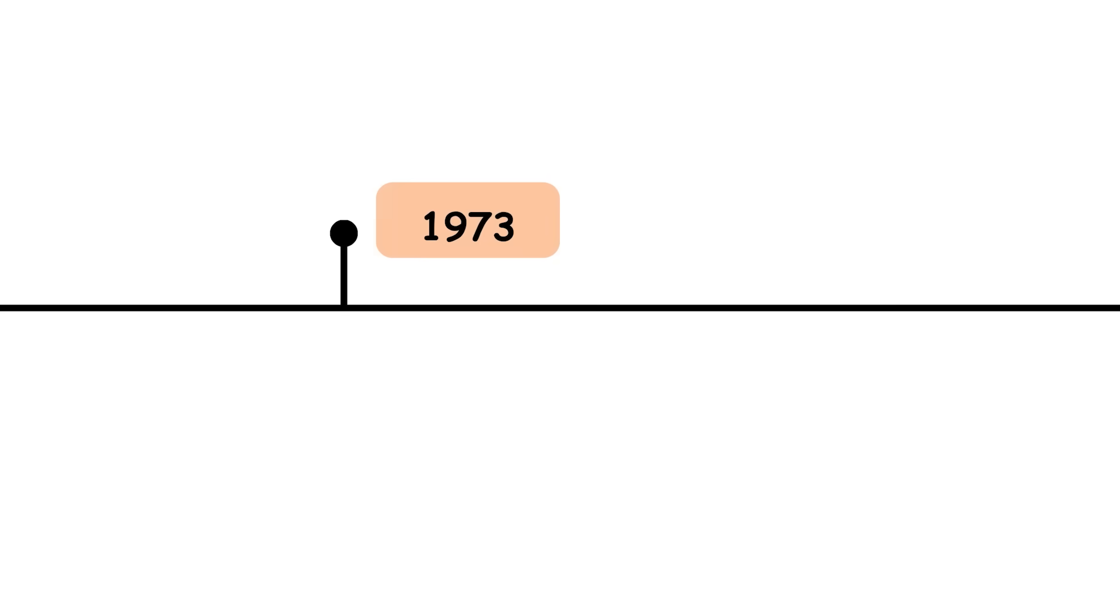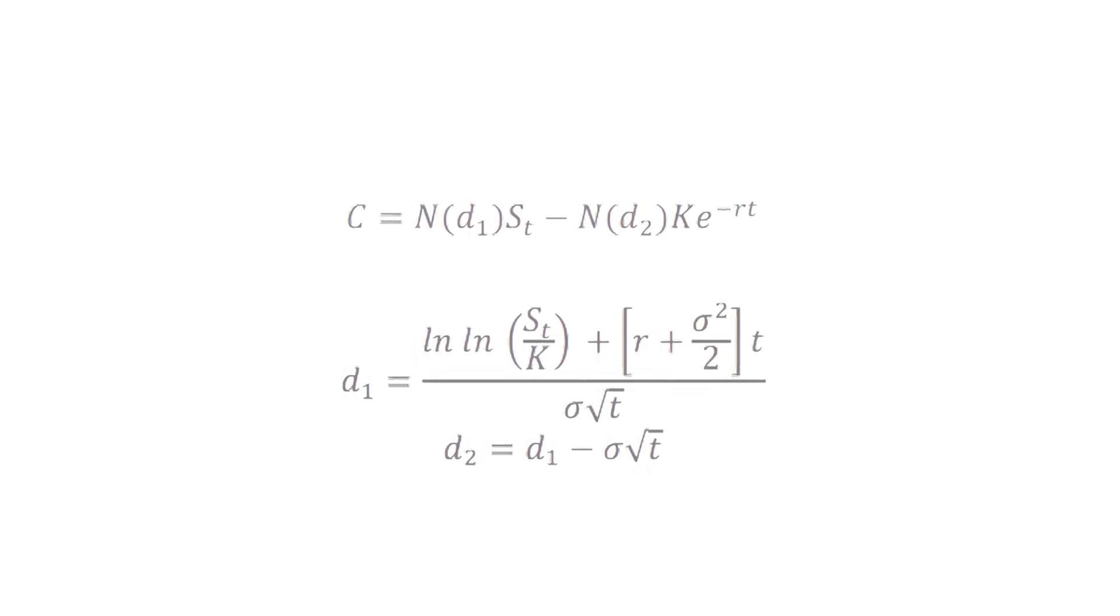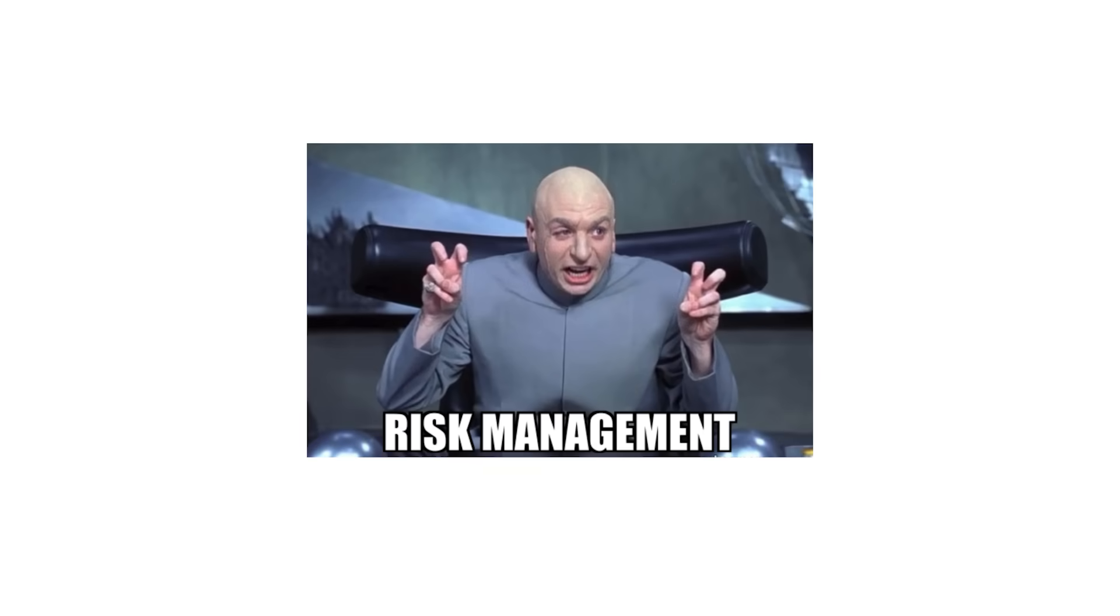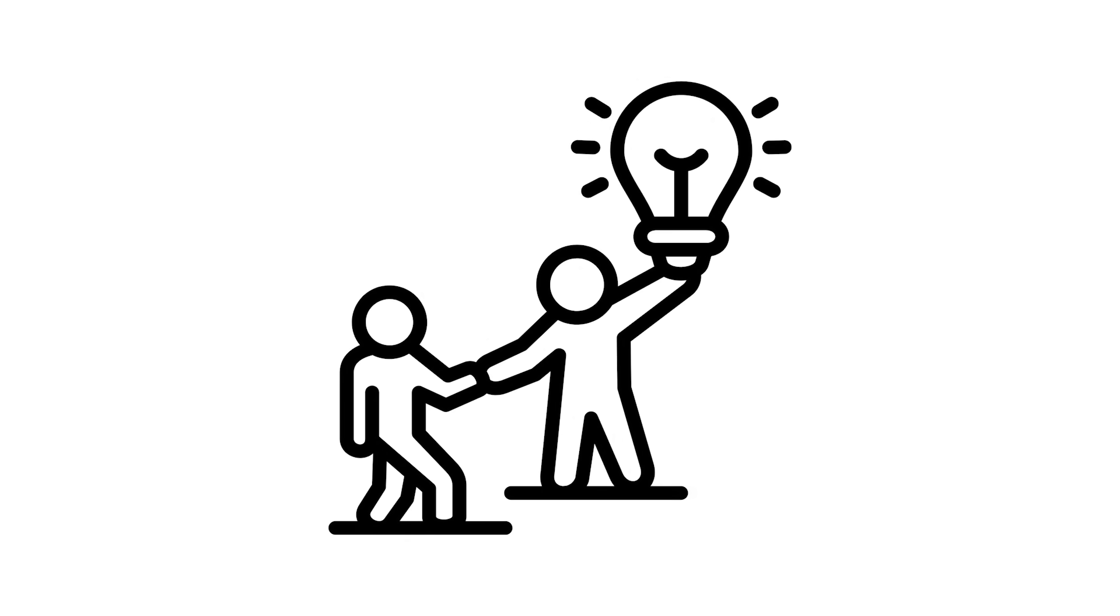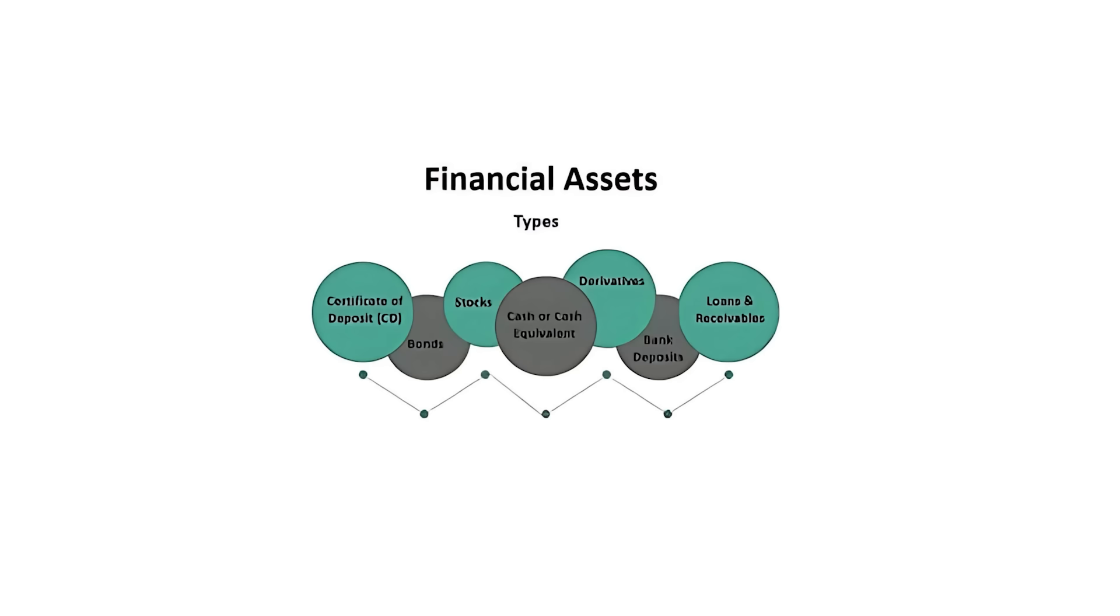1973: Black-Scholes Model. The Black-Scholes equation revolutionized finance by providing a formula for pricing options, promoting efficient markets, managing risks, and inspiring the development of advanced mathematical models to understand and predict the behavior of financial assets.